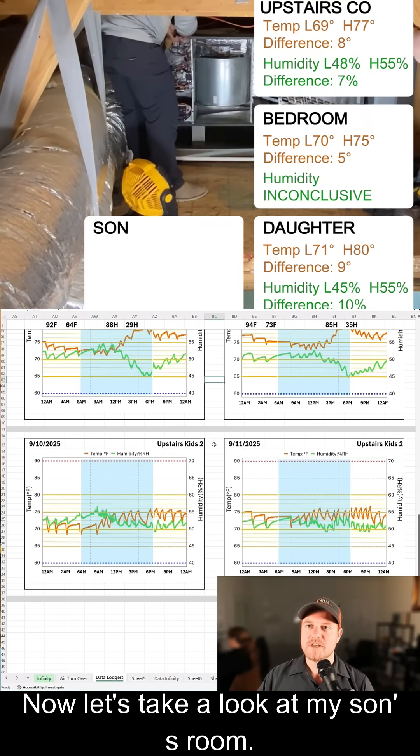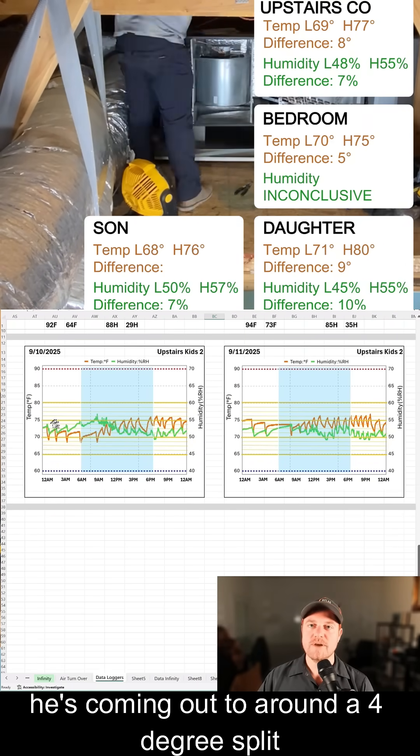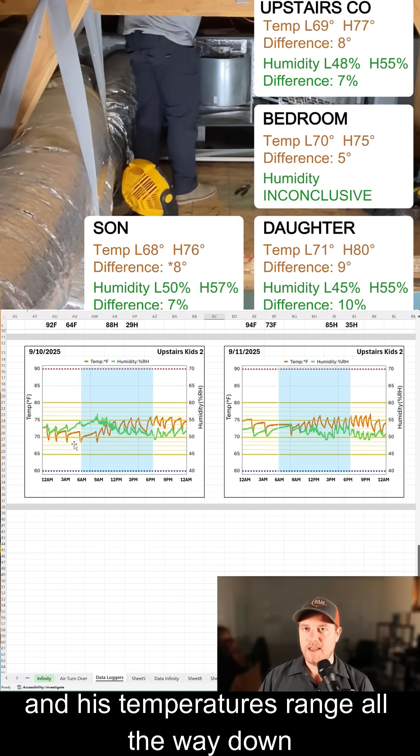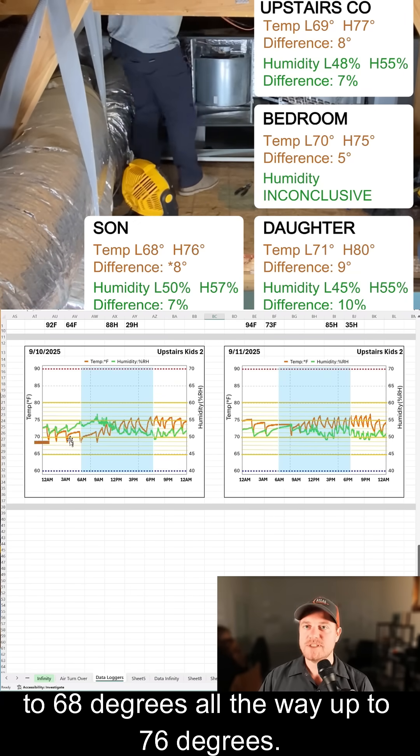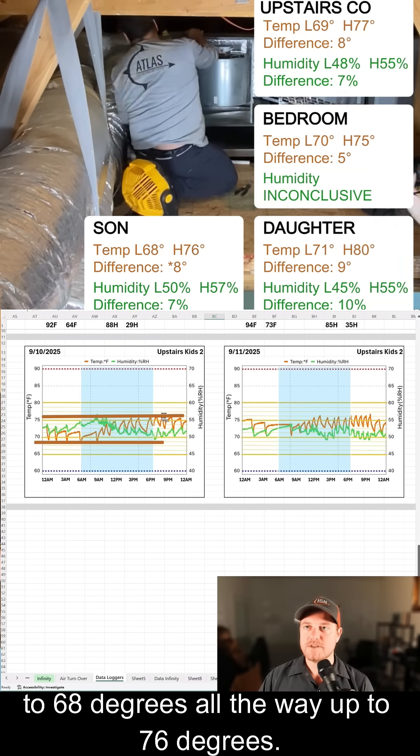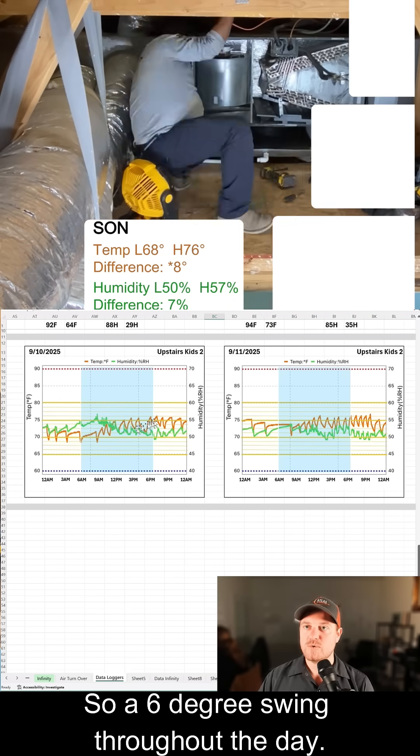Now let's take a look at my son's room, and he's not running a fan in his room, so he's coming out to around a four degree split, and his temperatures range all the way down to 68 degrees, all the way up to 76 degrees, so a six degree swing throughout the day.